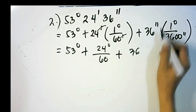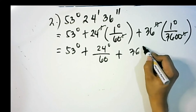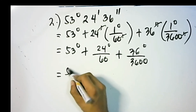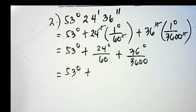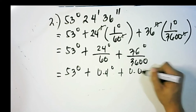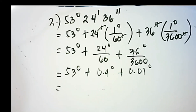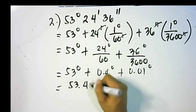Plus 36 — cancel both seconds — 36 degrees over 3,600. Then, 53 degrees plus 24 divided by 60 equals 0.4 degrees, plus 36 divided by 3,600 equals 0.01 degree. Getting the sum, the answer is 53.41 degrees.